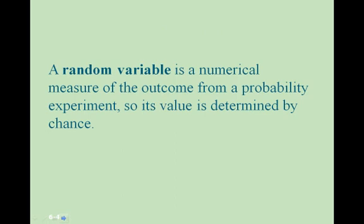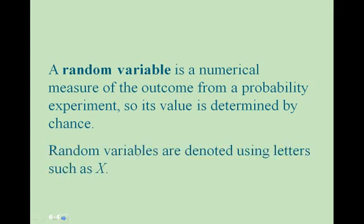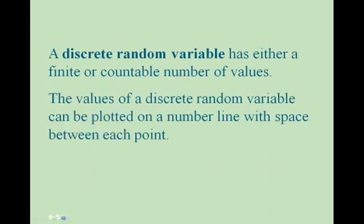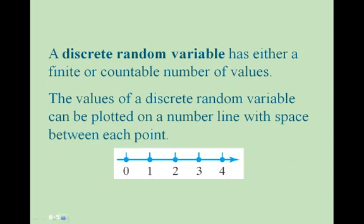A random variable is a numerical measure of the outcome from a probability experiment, so its value is determined by chance. Our random variables are denoted using letters such as X. A discrete random variable has either a finite or a countable number of values. The values of a discrete random variable can be plotted on a number line with space between each point.